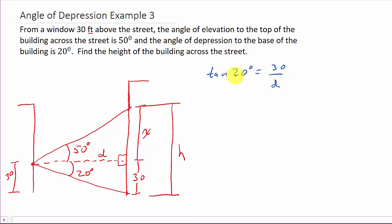And then if we solve for tangent 20, well, the D comes up here, and then if I, if, just say, if there's a D there, if I divide both sides by tangent 20, I'll end up with 30 over tangent 20.